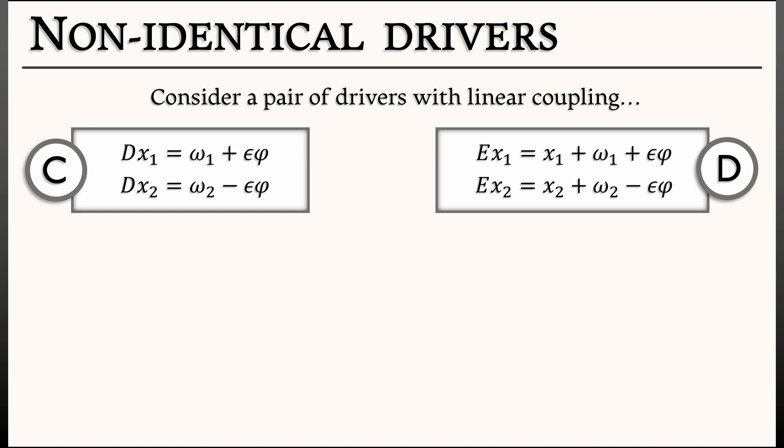But in this case, let's say that those two speeds ω are different. We have ω₁ for the first driver, ω₂ for the second driver. What happens when we have different natural speeds? You might think they're moving at different speeds, and ε is really small, so they just keep moving at different speeds.